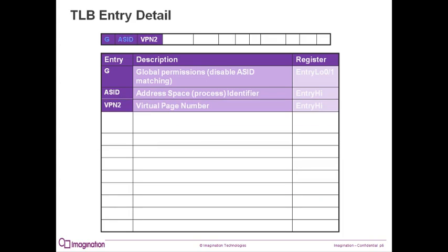VPN2 is the virtual page number to be looked up. Each entry contains two translations: one for the even number page and one for the odd number page. The lower order bit of the VPN is not used to find the entry but is used to determine which of the two translations contained in the entry is used. The VPN is stored in the entry high register.